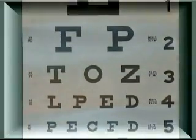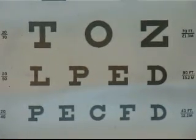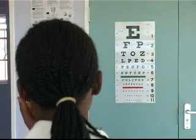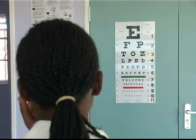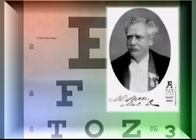The Snellen chart is used to measure visual acuity. Visual acuity refers to the clarity or clearness of vision, a measure of how well a person sees at a distance. The Snellen chart is also called an acuity chart or simply an eye chart. It is named after the Dutch ophthalmologist Herman Snellen, who invented the chart in the 19th century.